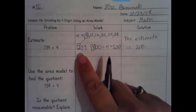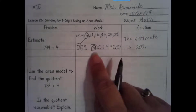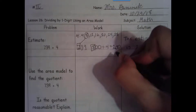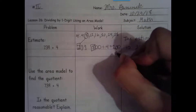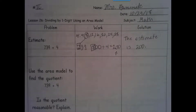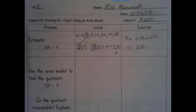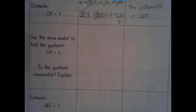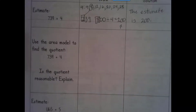Now 739 went up to 800, so that means this is a high estimation — the actual quotient should be under 200 but pretty close. Now we are going to do our area model.